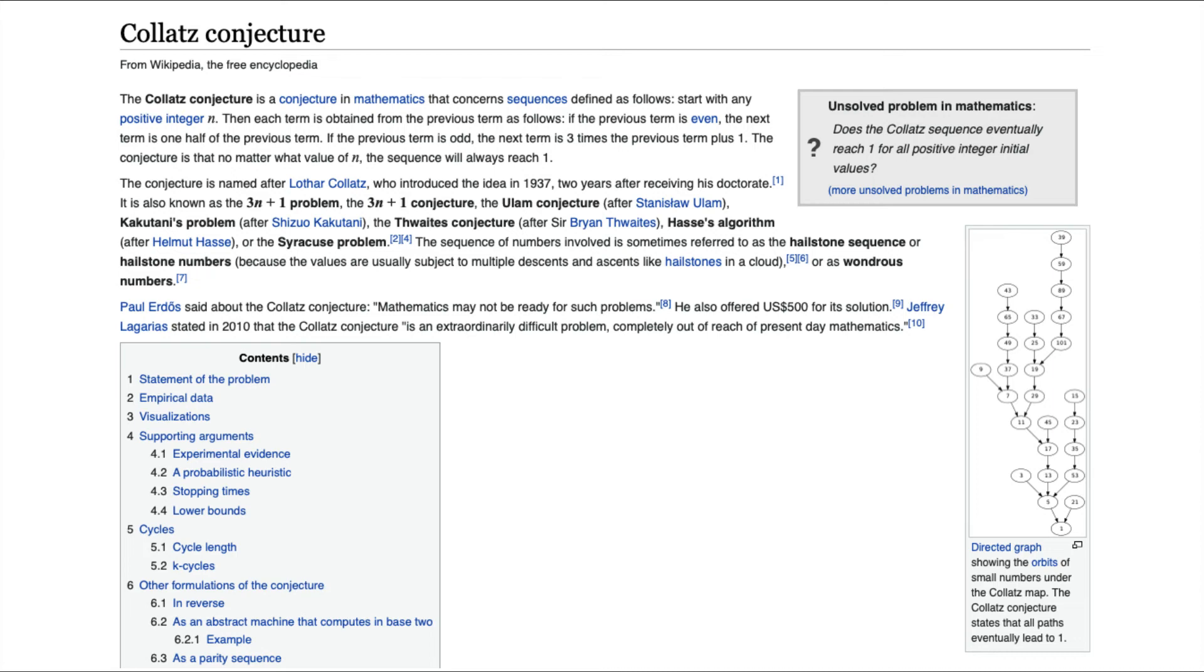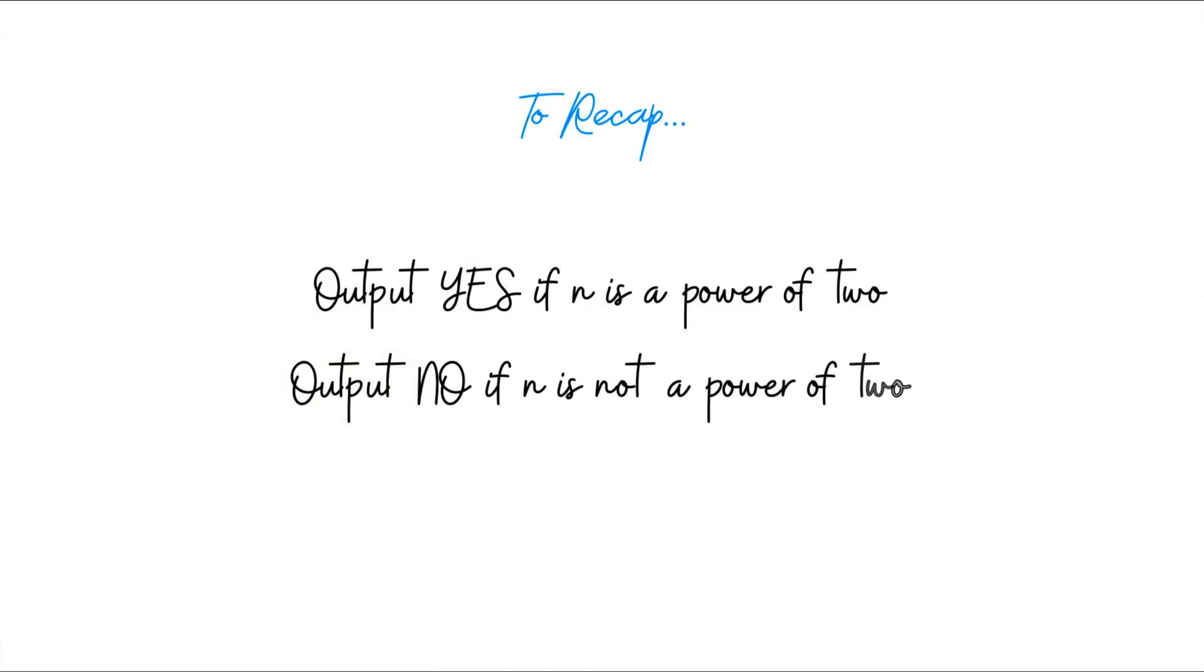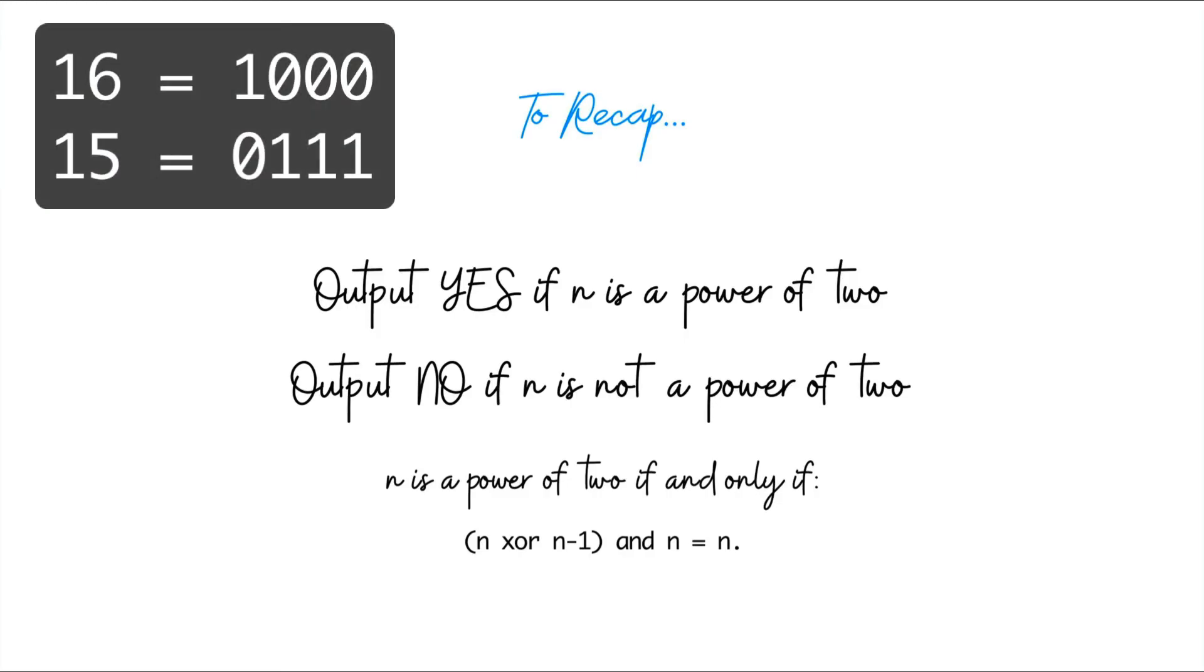But let's now recap what we have learned. For the version of the code that we saw in the problem statement, we can say yes if n is a power of 2 and we can say no if n is not. Now, I promised you a bit manipulation trick that would help you identify if n is a power of 2 or not. And here it is. You can test if n is a power of 2 or not by just taking the xor of n and n minus 1 and doing an and with n and check if that is n. You can probably see right away that if n is a power of 2, then this equation is satisfied. Because when you do n xor n minus 1, you get essentially all 1s. And when you and that with n, then only the most significant bit is the only one that survives and you get back n.